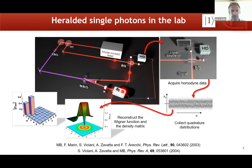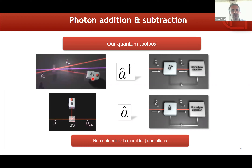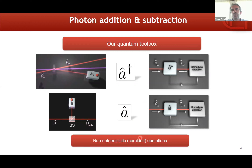Besides generating single photons, we can use spontaneous parametric down-conversion not in a spontaneous way but in a stimulated way — injecting light into the signal mode. When we get a click in the idler mode, it means we have added exactly one single photon to the input state of light, implementing experimentally the photon creation operator a†. We can also implement the photon annihilation operator a using a beam splitter of low reflectivity and detecting a photon in the reflected mode — when we see a click, we have implemented photon annihilation on the input state.